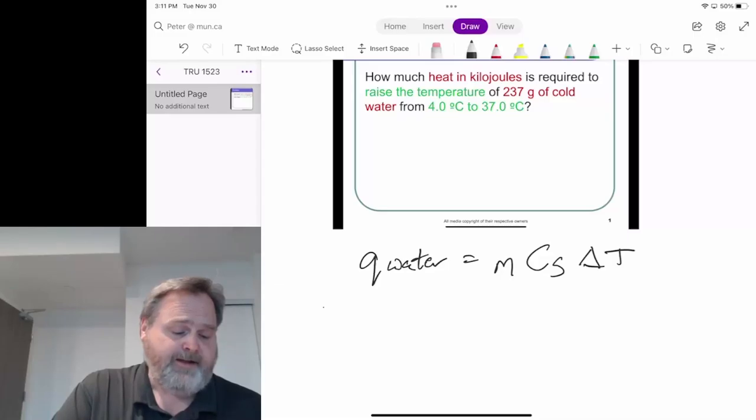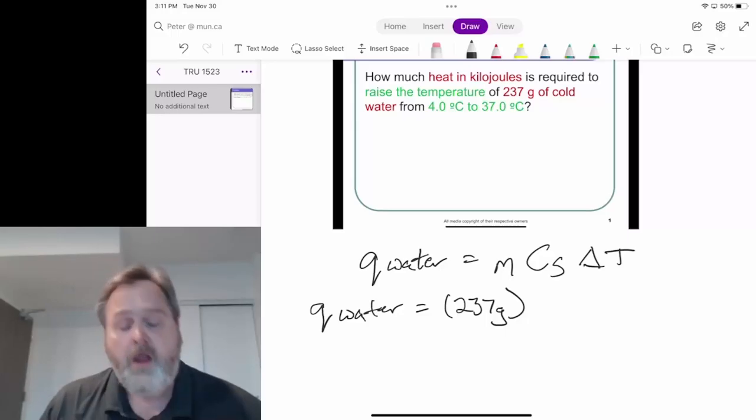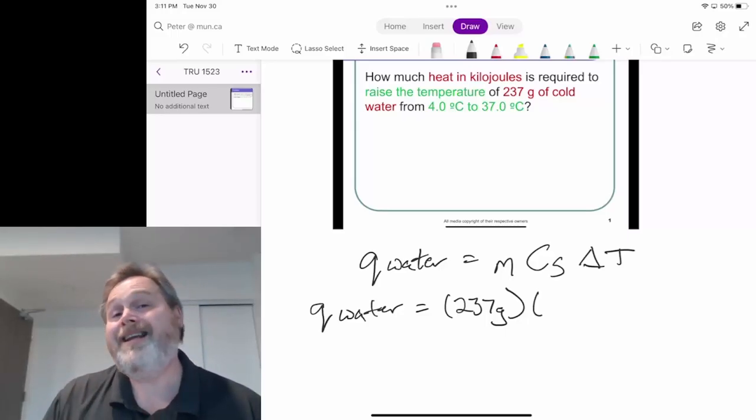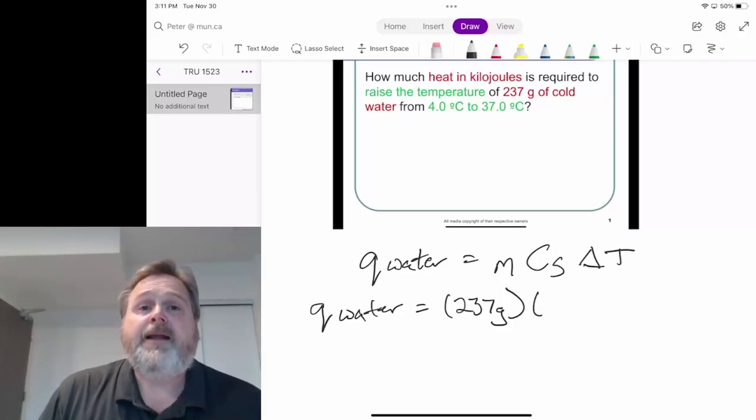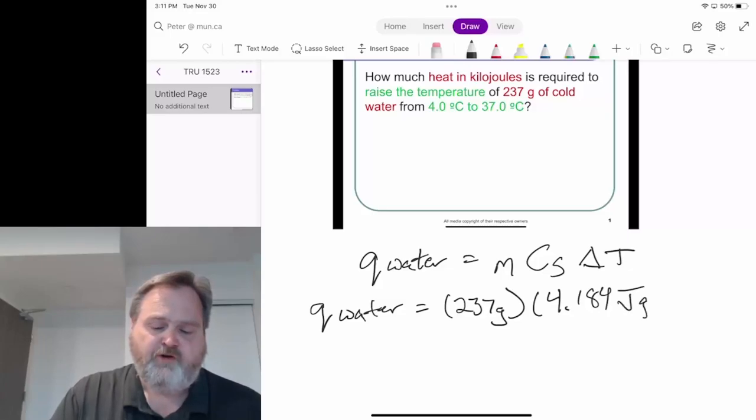So q water equals that 237 grams, multiplied by the specific heat capacity of water, which you would need to look up for this problem. But frankly, it's a number that is going to be used a fair bit, so you might get used to remembering it: 4.184 joules per gram per degree Celsius.